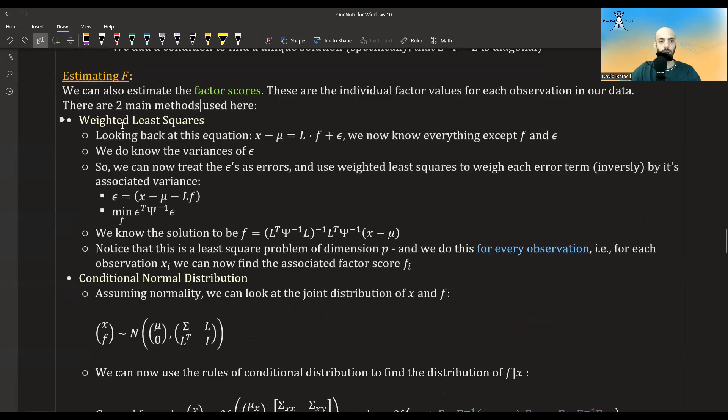There are two methods to do this. One is weighted least squares. So looking back at this equation of our model, we know that we actually know everything here. So we have the x, the mu, the L. We don't have F and we don't have epsilon. But we do know the variances of epsilon. So what we could do now is treat the epsilons as errors and try to minimize the squared errors weighted by the inverse of the variance. So if the variance of a certain epsilon is large, we care less about that error term. And if it's small, we want to try and fit and minimize that epsilon as much as possible. This is called weighted least squares. It's a part of generalized least squares, which I have a video about. And you should check it out if you don't know what I'm talking about.